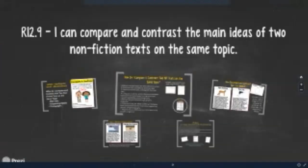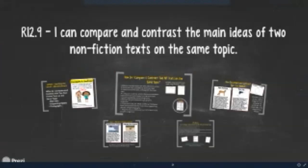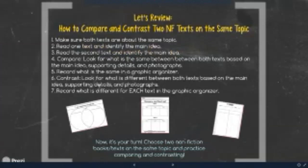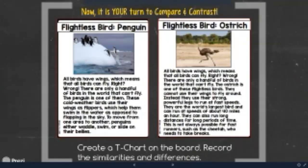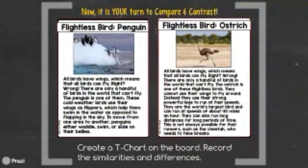Now it's your turn to compare and contrast. Let's look at this one — Flightless Bird: Penguin. All birds have wings, which means all birds can fly, right? Wrong. There are only a handful of birds in the world that can't fly. The penguin is one of them. These cold weather birds use their wings as flappers, which help them swim in the water as opposed to flapping in the sky. To move from one area to another, penguins will either waddle, swim, or slide on their bellies. So our first story is about penguins.